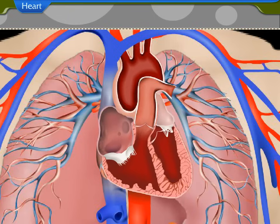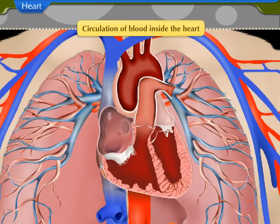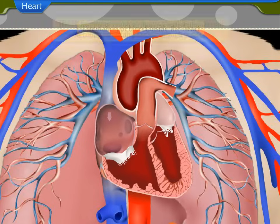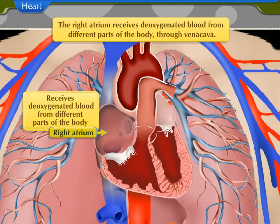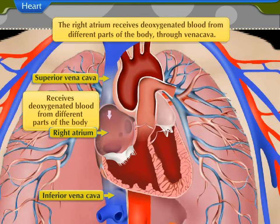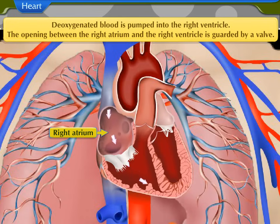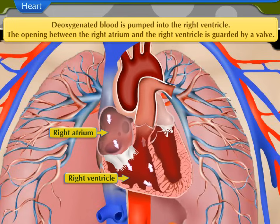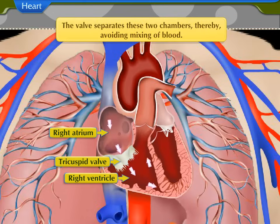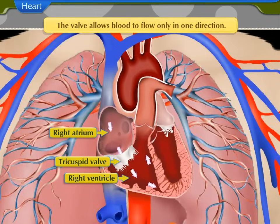Now let us study the circulation of blood that occurs inside the heart. The right atrium receives de-oxygenated blood from different parts of the body through the vena cava. This blood is pumped into the right ventricle. The opening between the right atrium and the right ventricle is guarded by a valve. The valve separates these two chambers, thereby avoiding mixing of blood, and also allows blood to flow only in one direction.